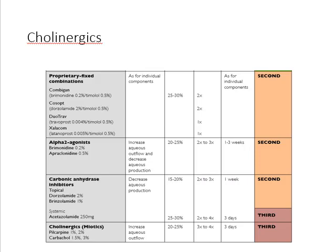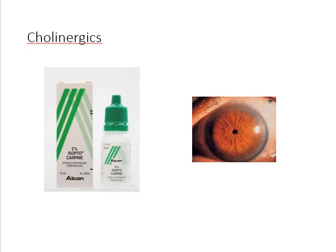Finally, cholinergics are particularly effective in angle closure glaucoma. They contract the ciliary muscle, are miotic, decrease aqueous production, and also increase trabecular outflow. The dosage is four times a day and they take about a week to take effect. An example is Isopto Carpine. Side effects include miosis, aching brow, blurred vision, a myopic shift, poor pupil dilation, and scarring of the conjunctiva.